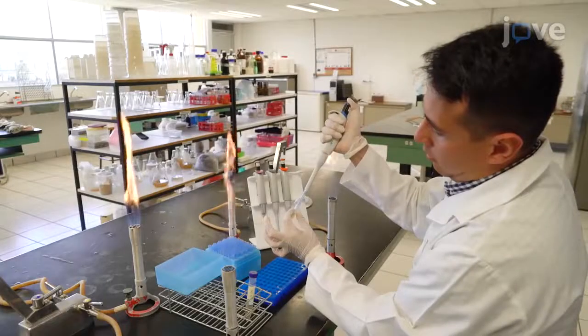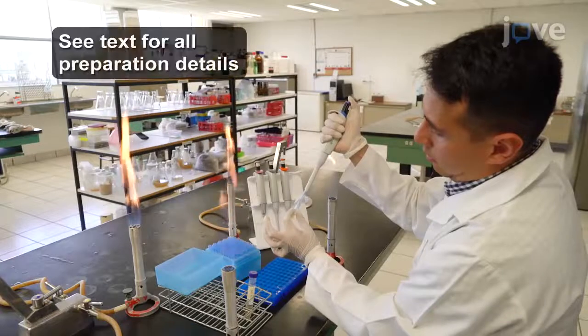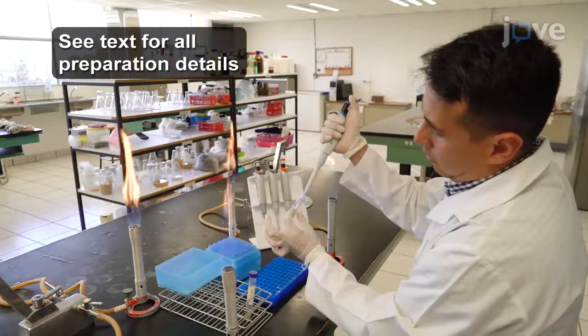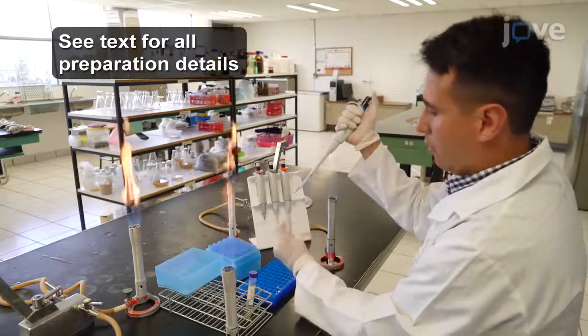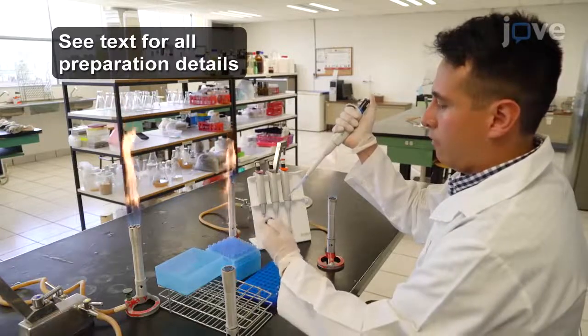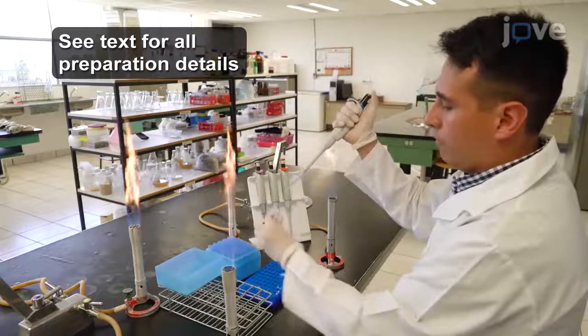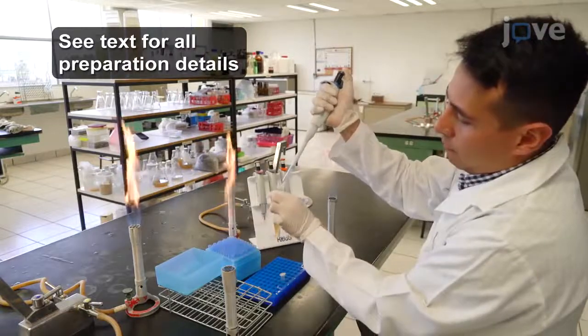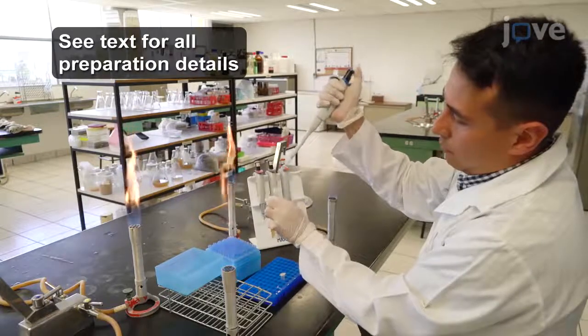Begin by inoculating a 15-milliliter conical tube containing 3 milliliters of cold sterile 2% yeast extract peptone dextrose (YPD) broth with 250 microliters of S. cerevisiae cells preserved in glycerol at negative 20 degrees Celsius.